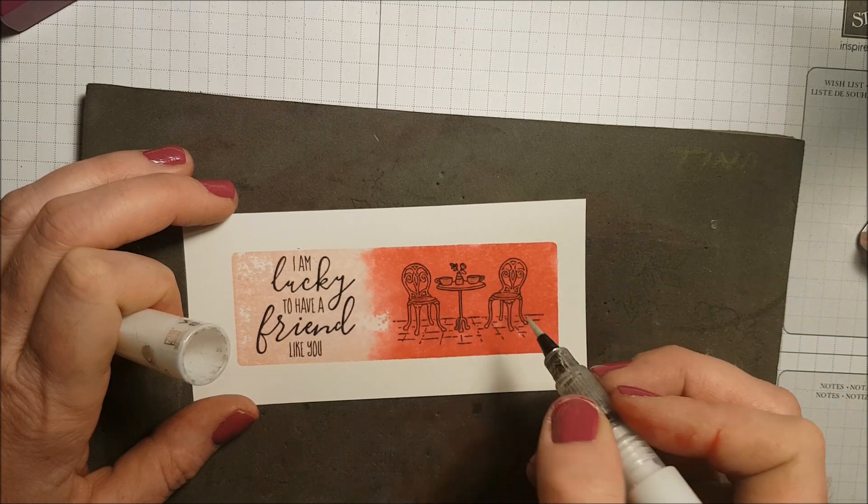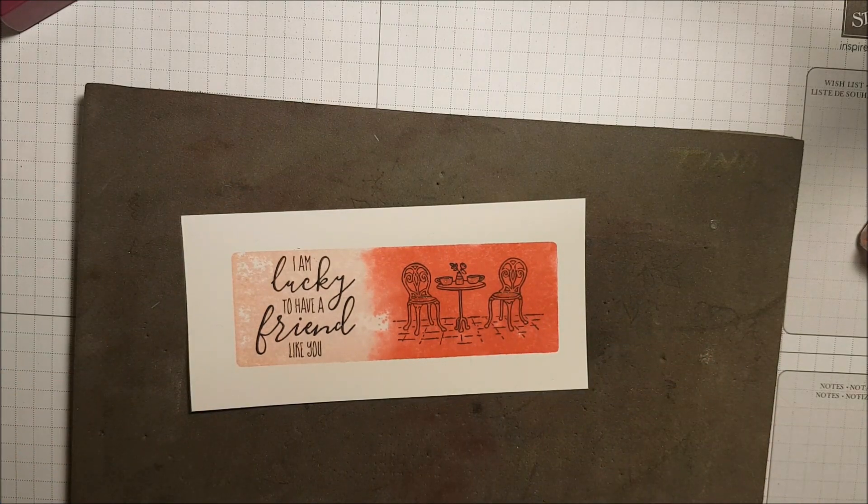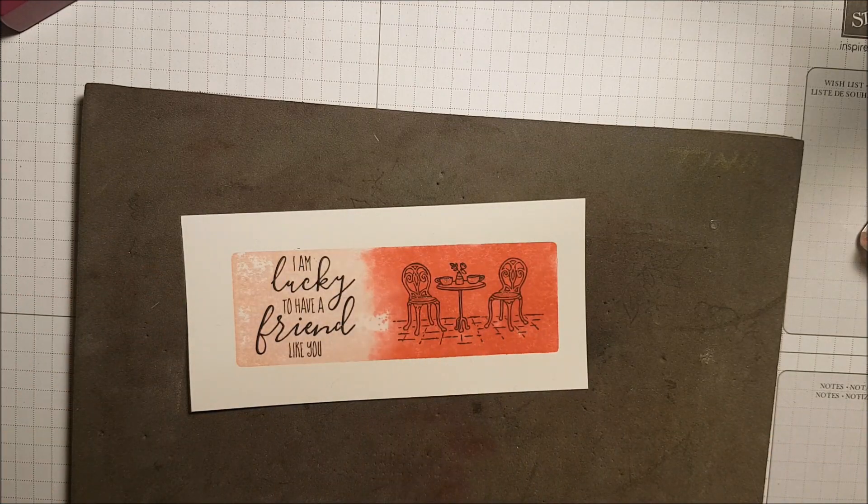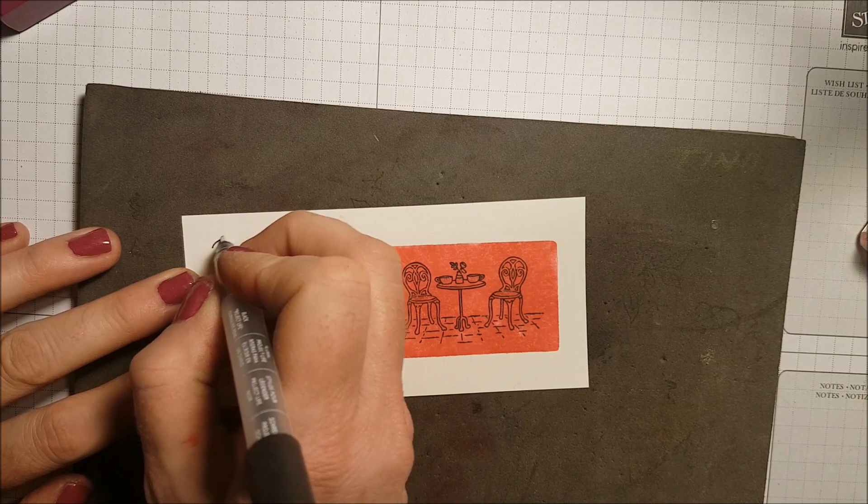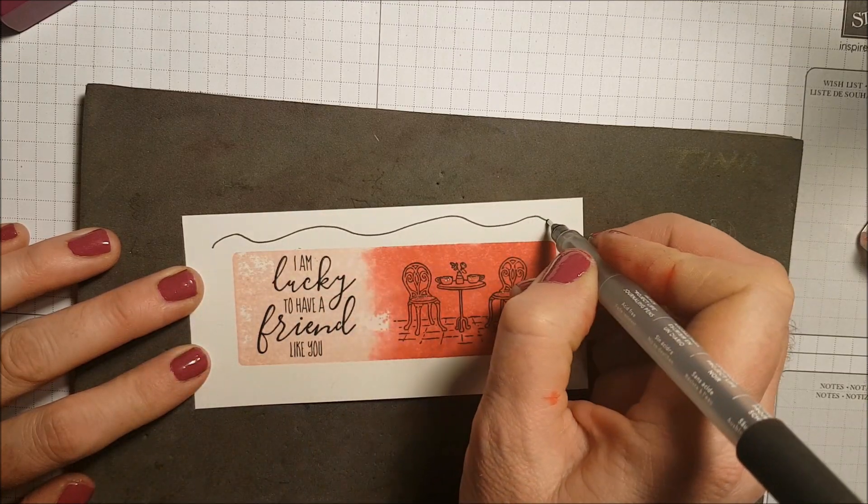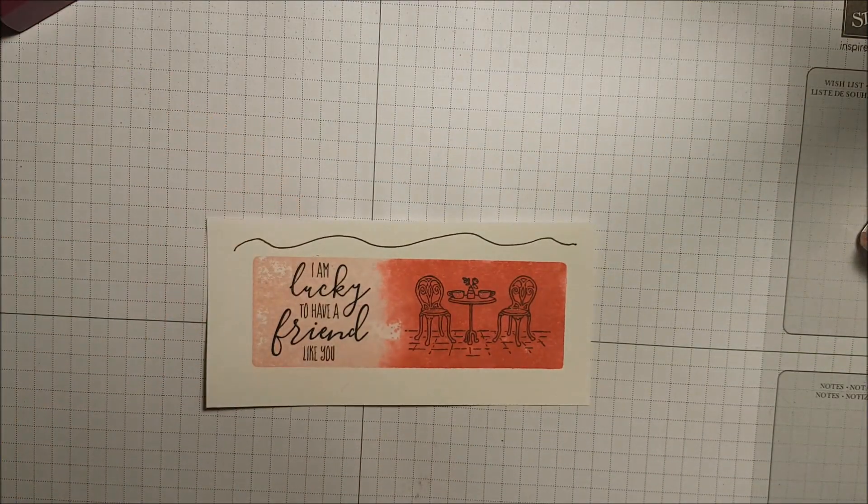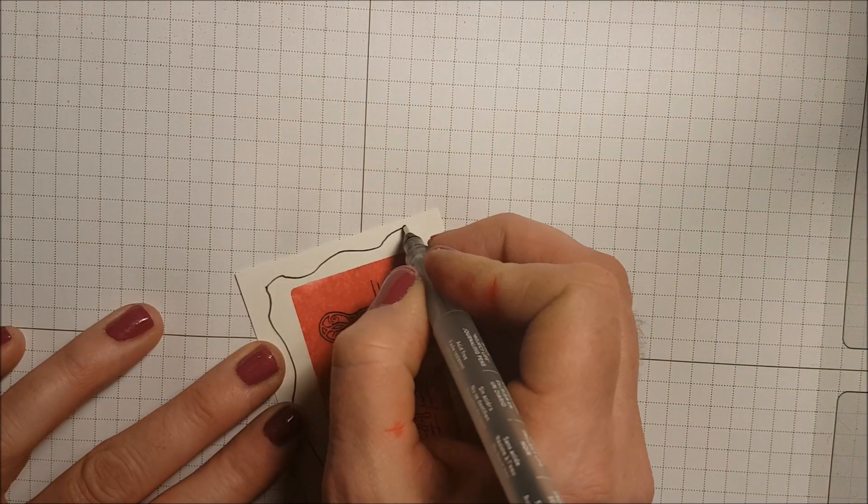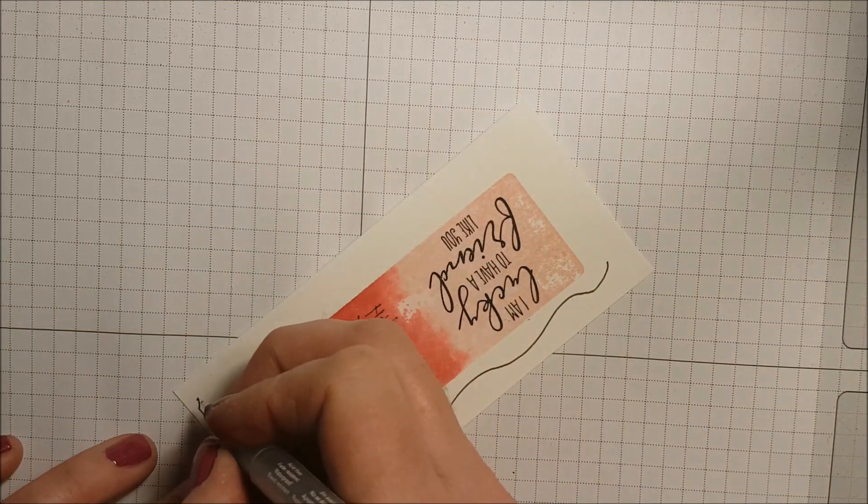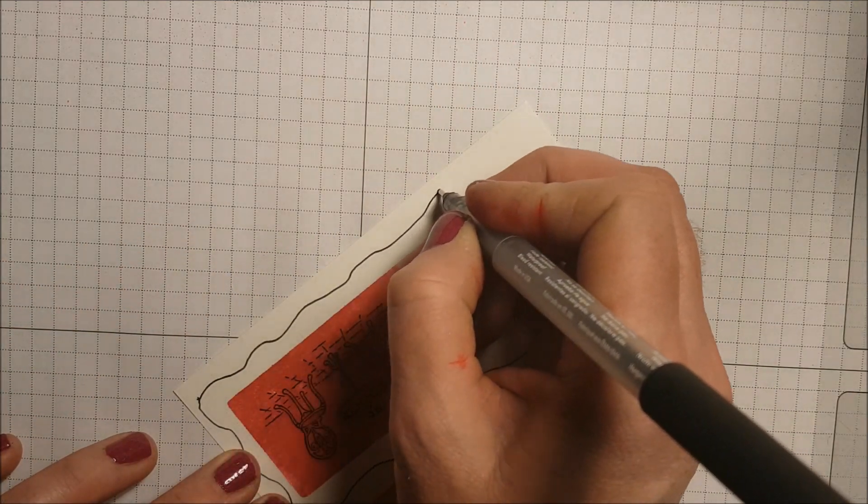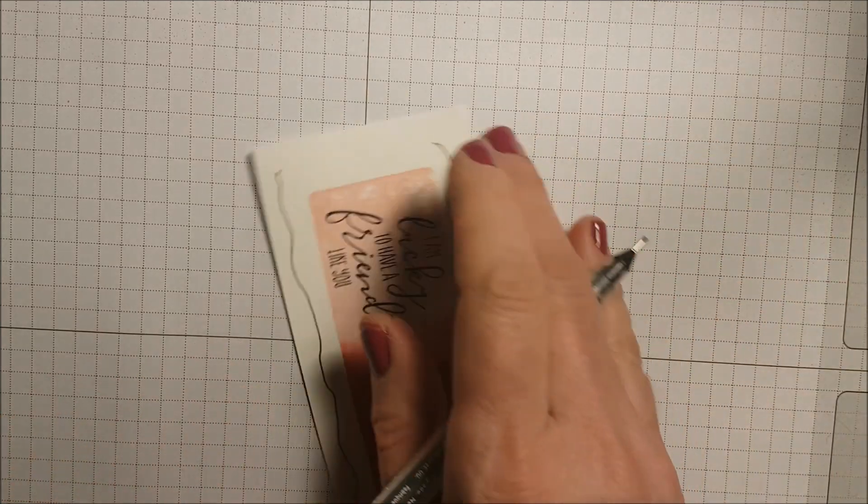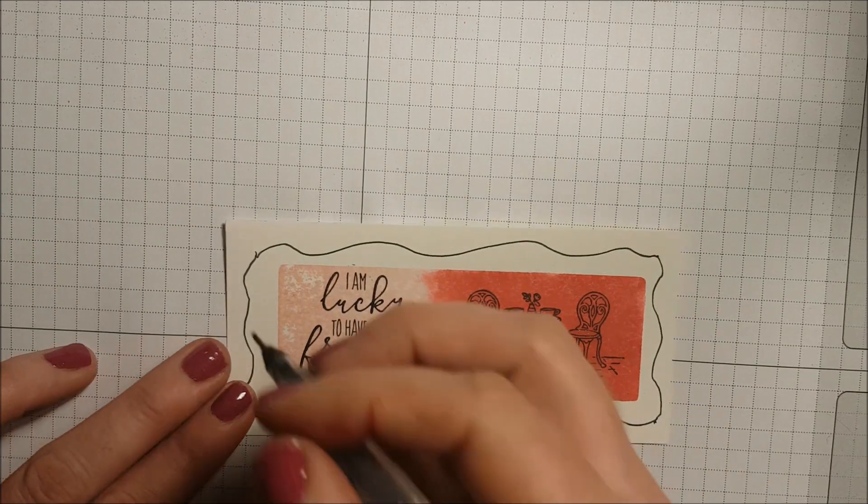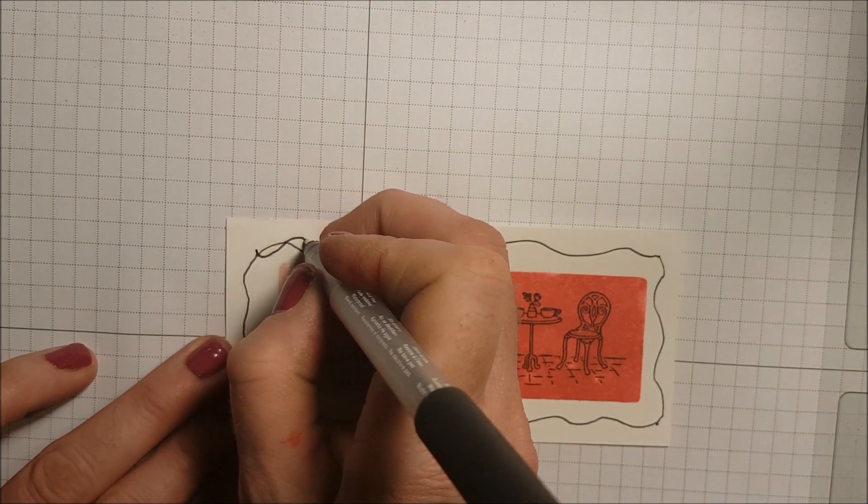Now I'm taking our journaling pen because I want to add a little border around this. So all I'm going to do is just kind of do wavy lines like this, and then I'm going to do a second line all around it.